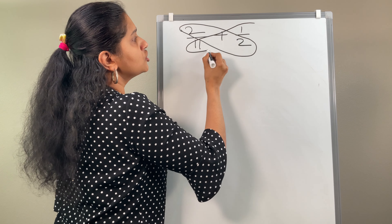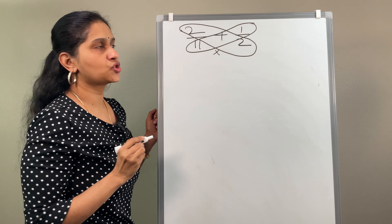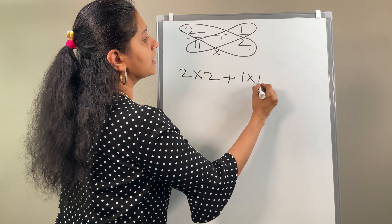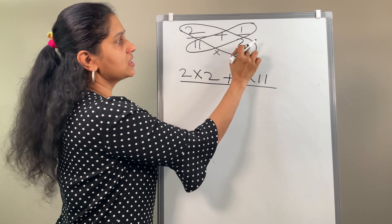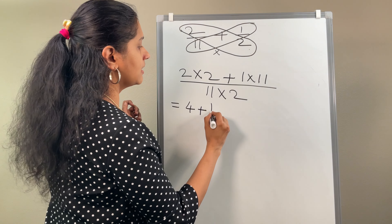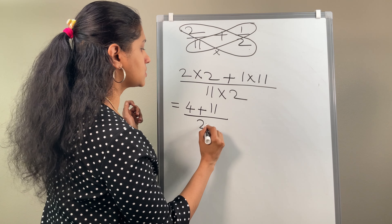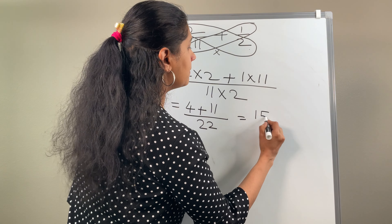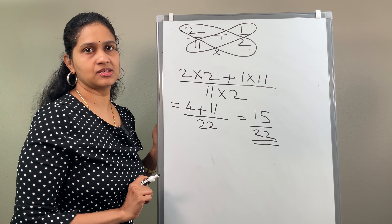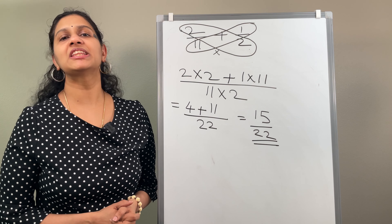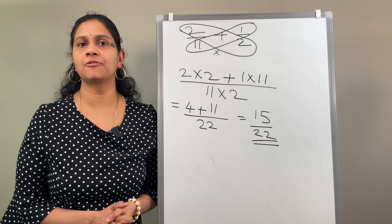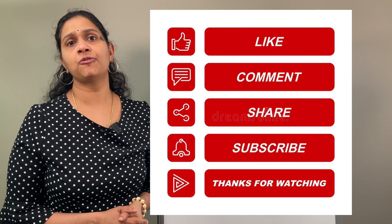Now consider another example using the butterfly method: 2 by 11 plus 1 by 2. The numerator of the first times denominator of the second: 2 times 2. Plus numerator of the second times denominator of the first: 1 times 11. Divided by 11 times 2. So 2 times 2 is 4, plus 1 times 11 is 11, over 11 times 2 is 22. What is 4 plus 11? That is 15 by 22. We cannot simplify it, so the answer is 15 by 22.